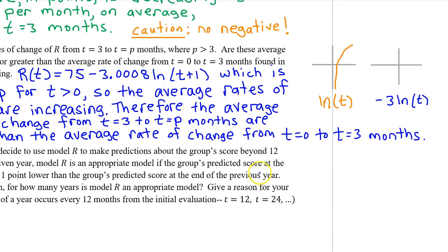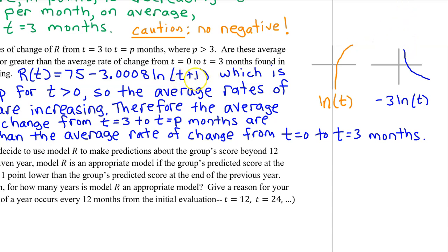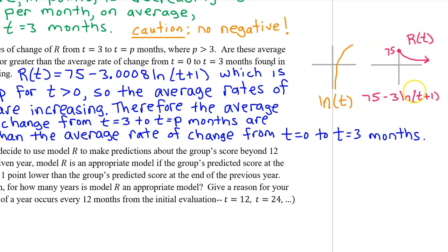Here's how you know what the graph of R(t) looks like even without the graphing calculator. The parent function natural log t looks like a standard log curve. The b value of approximately negative 3 causes a reflection over the x-axis. Because of the vertical shift by 75, the graph is raised higher, and because of the horizontal translation by negative 1, the graph shifts over to touch the y-axis. So you can figure out the shape of R(t) without a calculator.